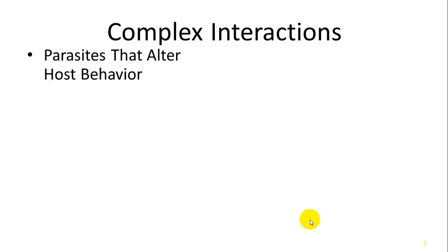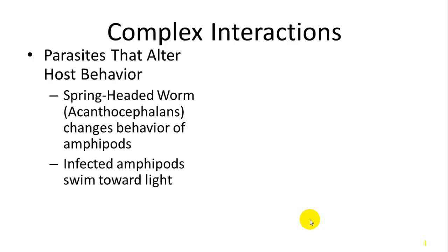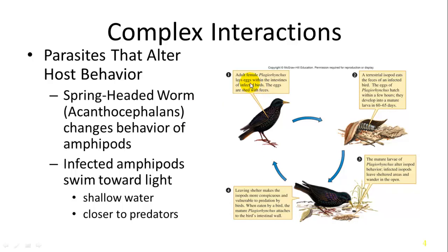There are very complex interactions which can affect the behavior of a host. An example is a parasite called the spiny-headed worm, Acanthocephalans, which changes the behavior of amphipods — small aquatic crustaceans. When infected, they will swim towards light, which leads them to shallow water closer to predators. The predators eat the amphipods, which carry an infection that then infects the predator and continues through its life cycle.